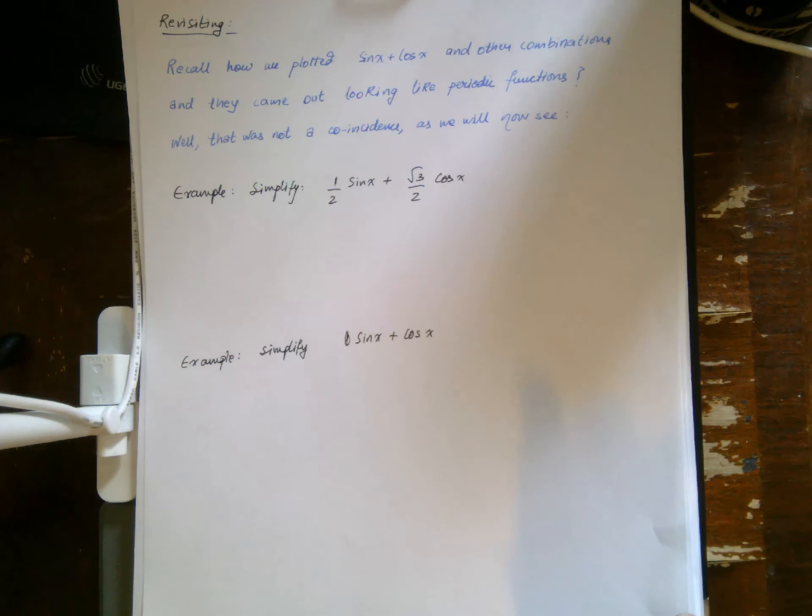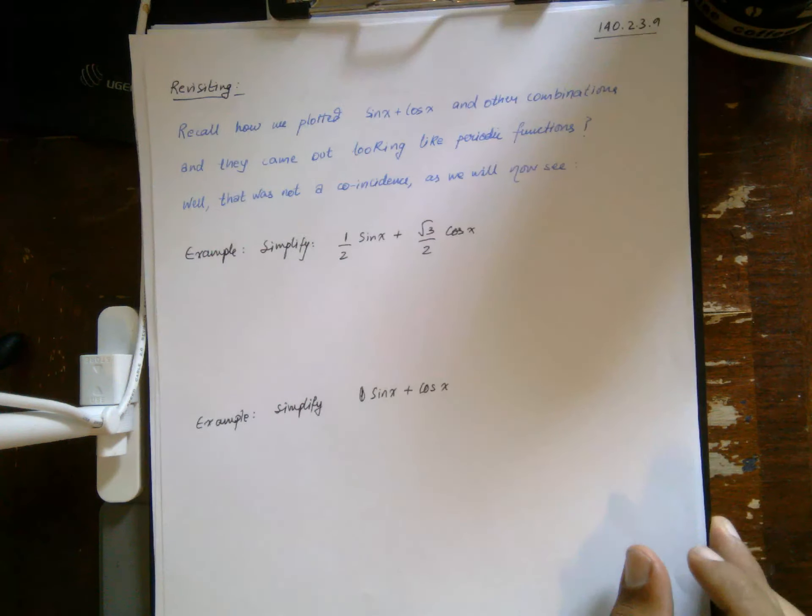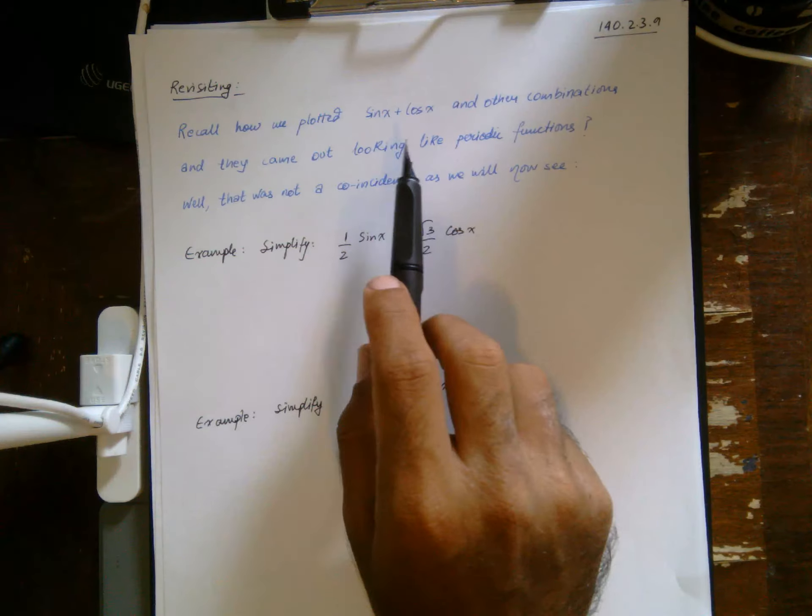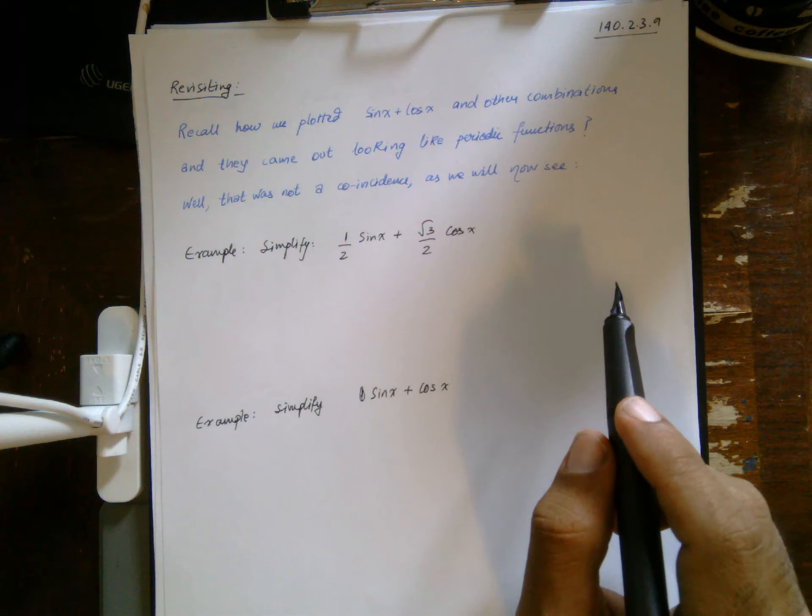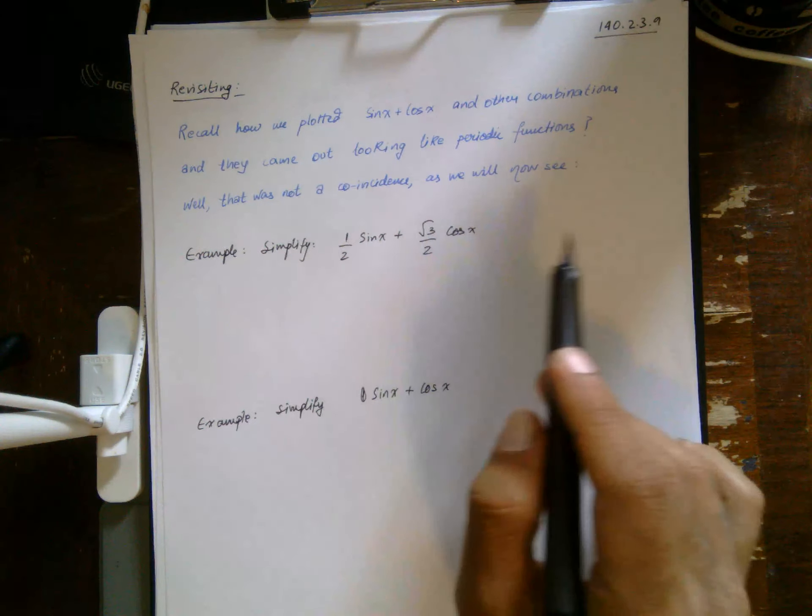Now let's revisit what I was talking about in terms of graphs. We used Desmos to plot sine x plus cosine x and other combinations, and they came out looking like periodic functions. So that was not a coincidence, and we're going to see that now.